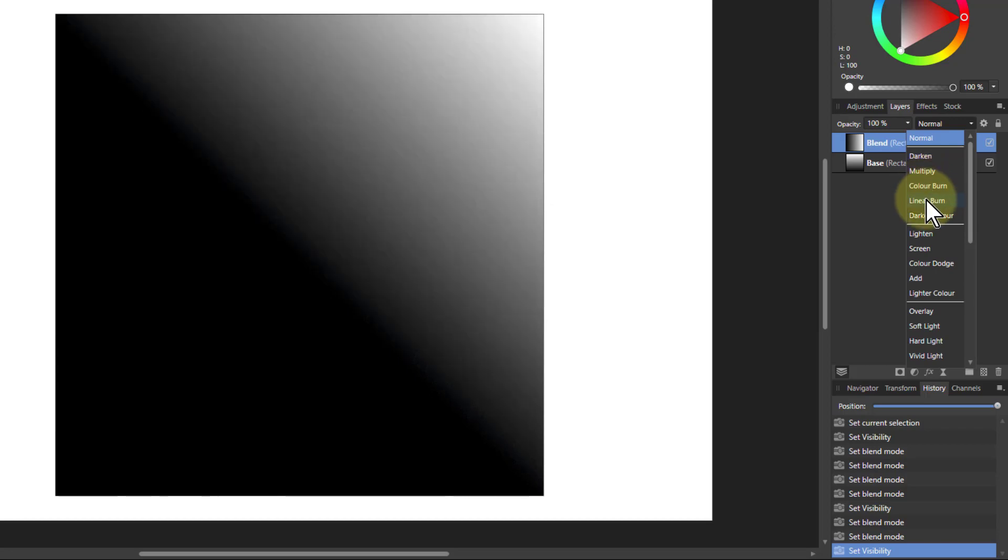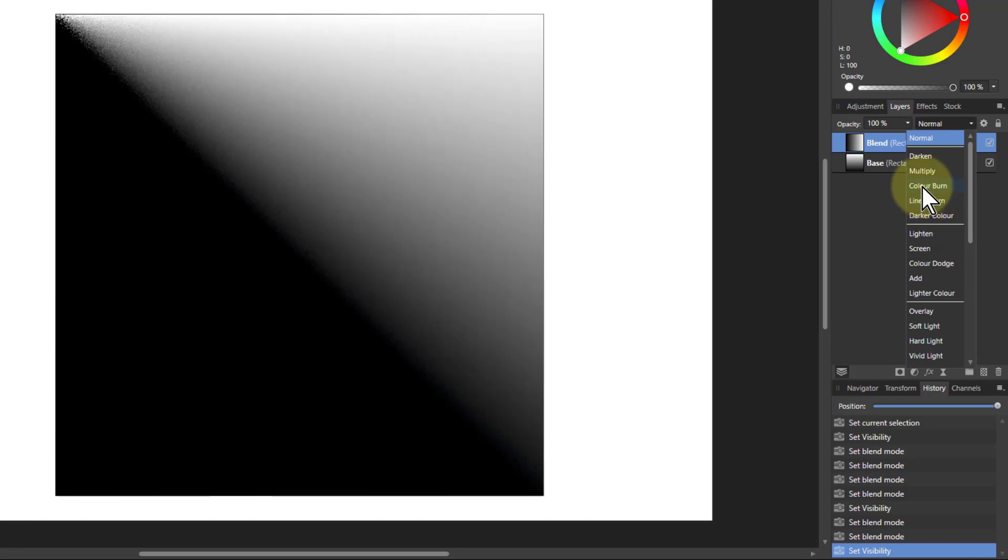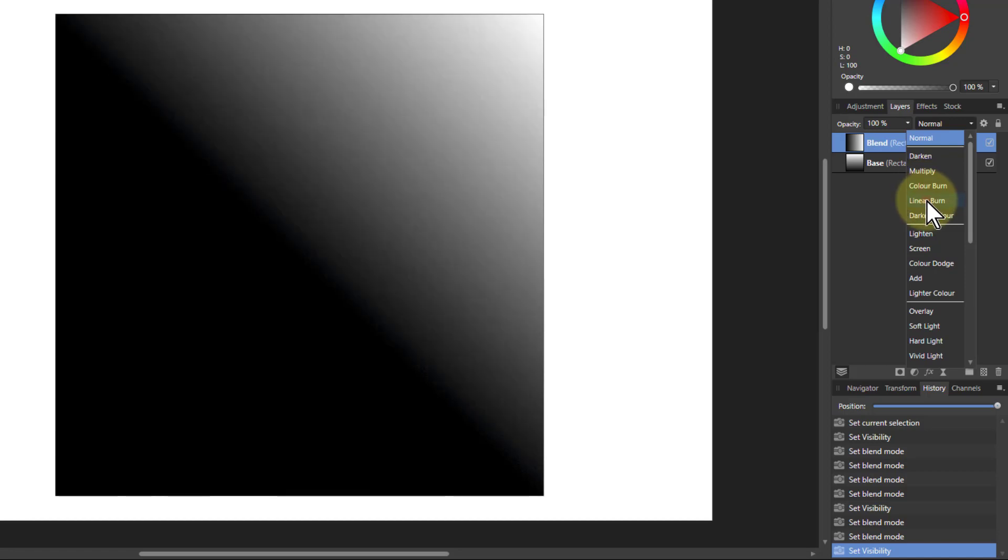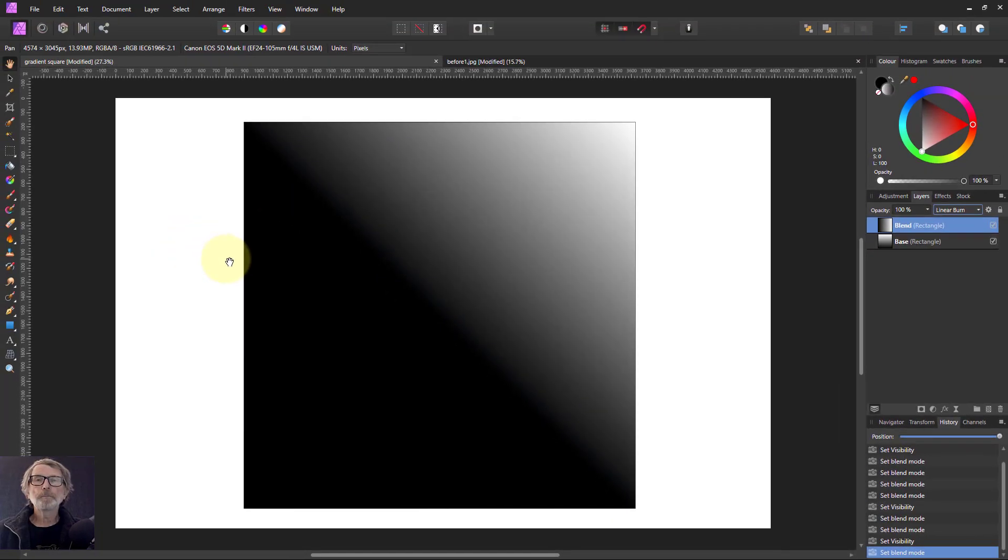And when we get to Linear Burn, you get that same effect here, where you get again the same triangle. Now you don't have that white preservation at the top. Let's see in colour burn. There you get that white at the top. Linear burn. The whites here are affected only when you get to here. So it's got to be white in both directions to stay white. So that's it.